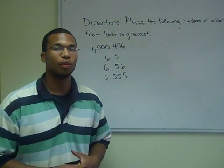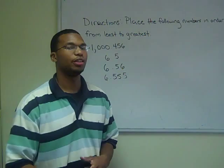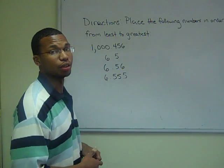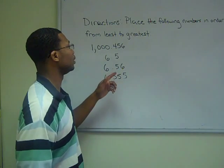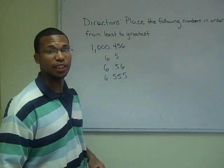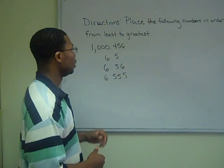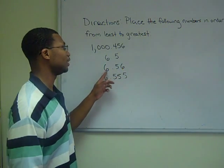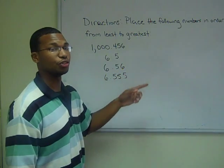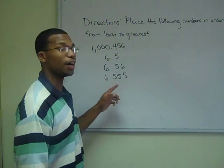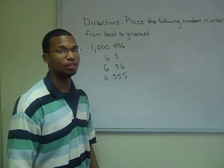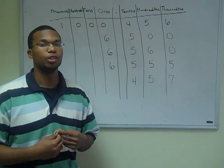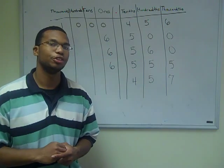Now we are ready to arrange decimals in order from least to greatest. Our directions say to put these numbers in order. So we have 1,456 thousandths, 6 and 5 tenths, 6 and 56 hundredths, and 6 and 555 thousandths. The first step we want to do is to place each number into their respective places on the place value chart.